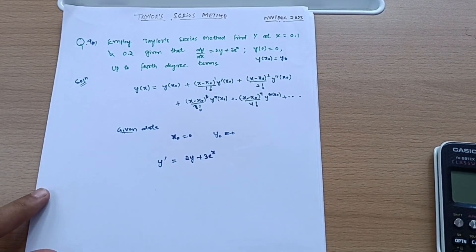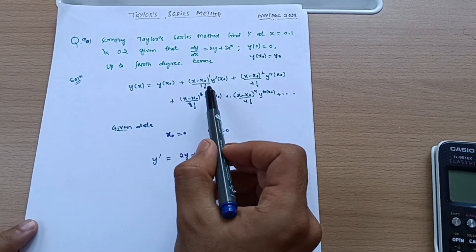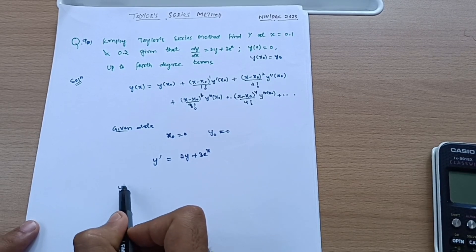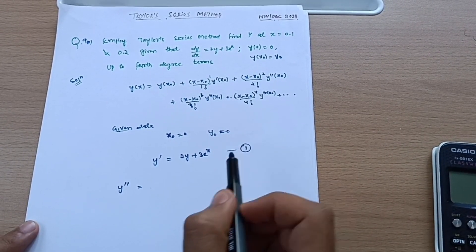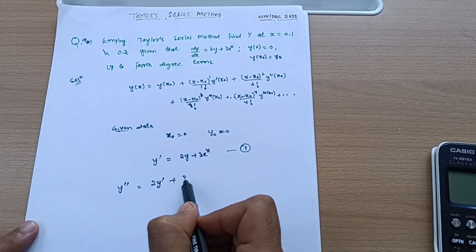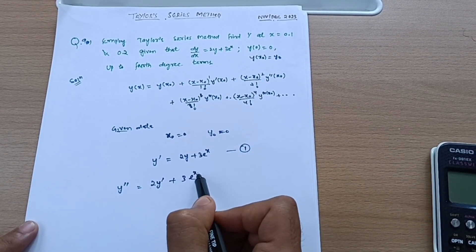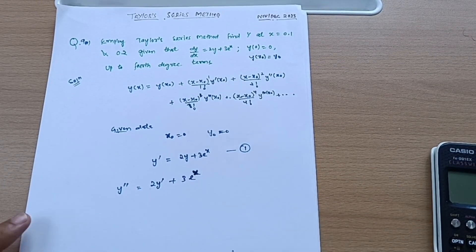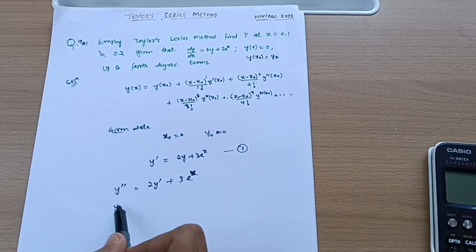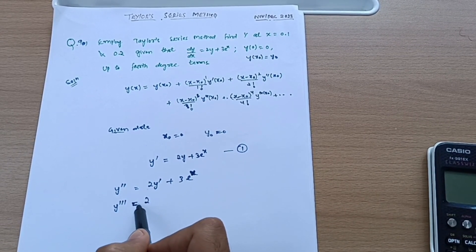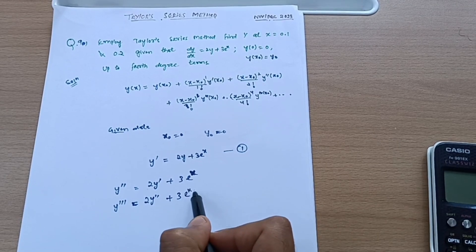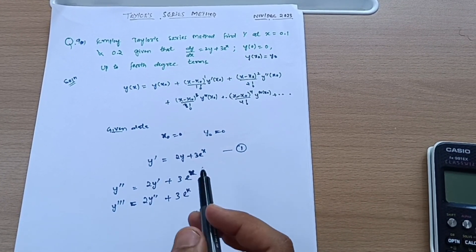Now we have to calculate y'(x₀), y''(x₀), y'''(x₀) so that we can employ them in the Taylor series. y'' means you differentiate the first equation: y'' = 2y' + 3eˣ. And y''' = 2y'' + 3eˣ. The differentiation of y is y', and the differentiation of eˣ is always eˣ.